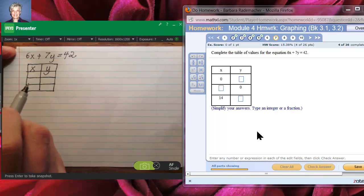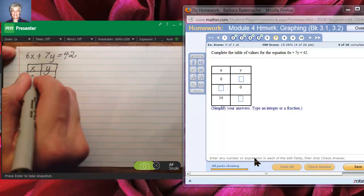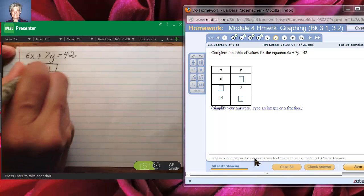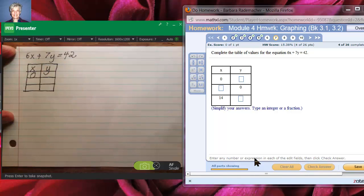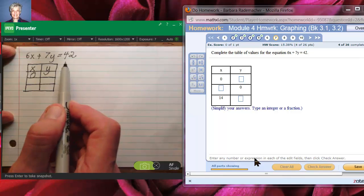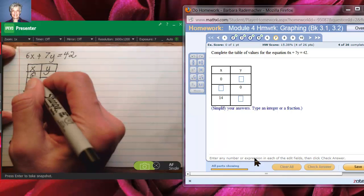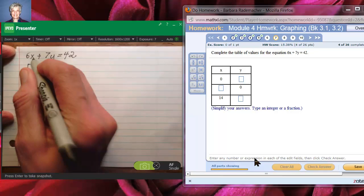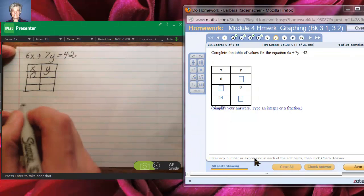Okay, well for the first point we're told that the x coordinate is 0 and we're being asked to find the y coordinate. This is how you do it. You take the equation you're given 6x plus 7y equals 42 and you take that 0 and you put it in for the x and then you solve for y.